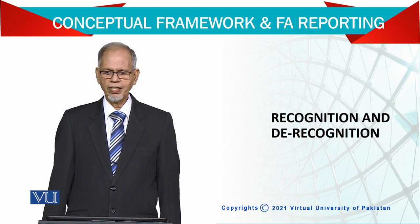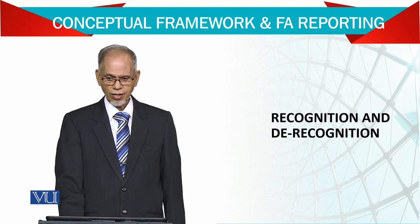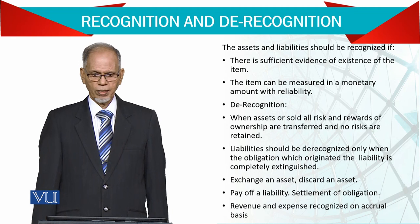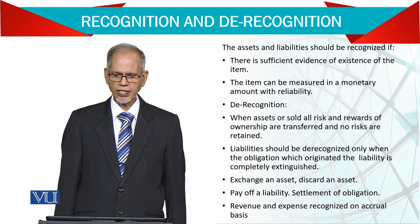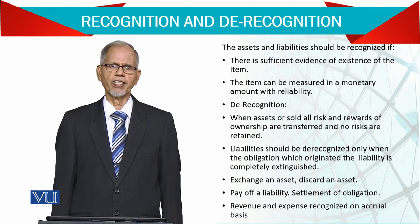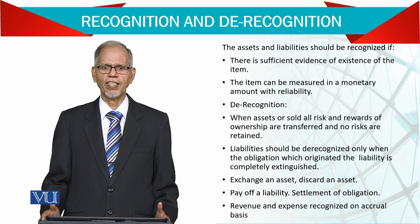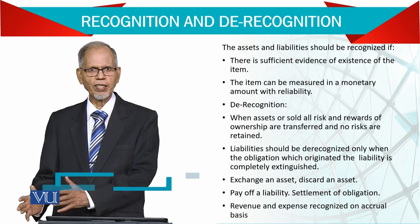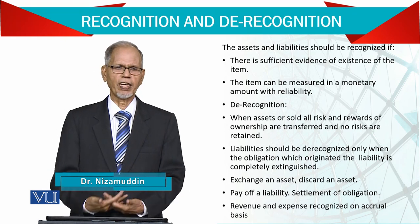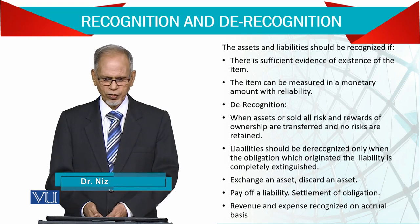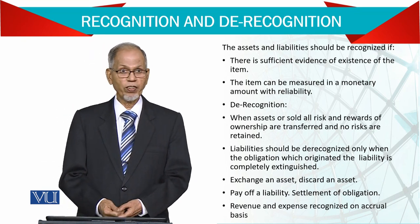The recognitions and de-recognitions of financial elements. Assets and liabilities should be recognized if there is sufficient evidence of existence of the item. There should be some proof, some evidence that there is something — some invoices which show that you bought this thing, cash memos and so on. There should be sufficient evidence of existence of the item and physically you have seen it.